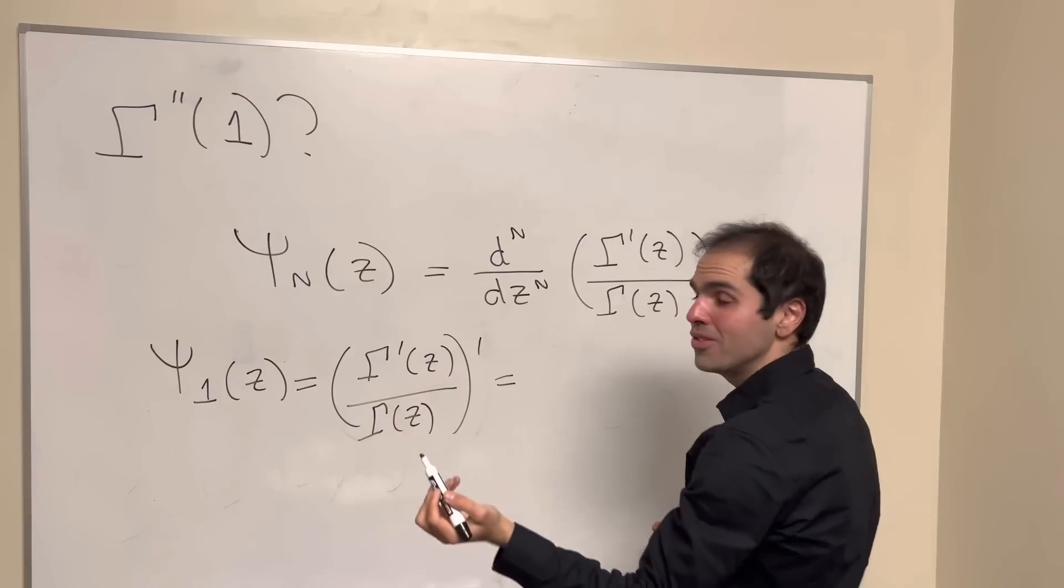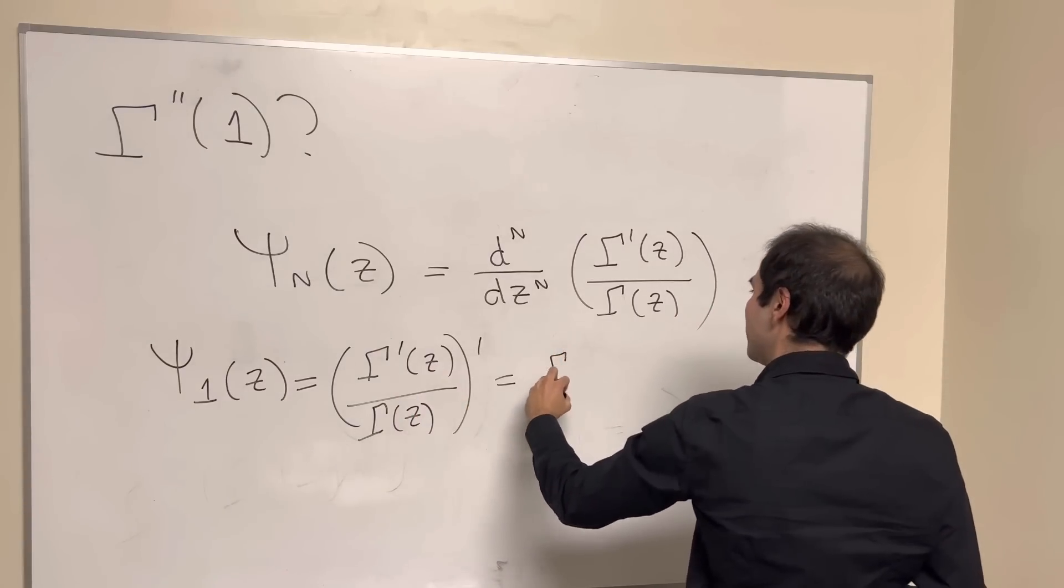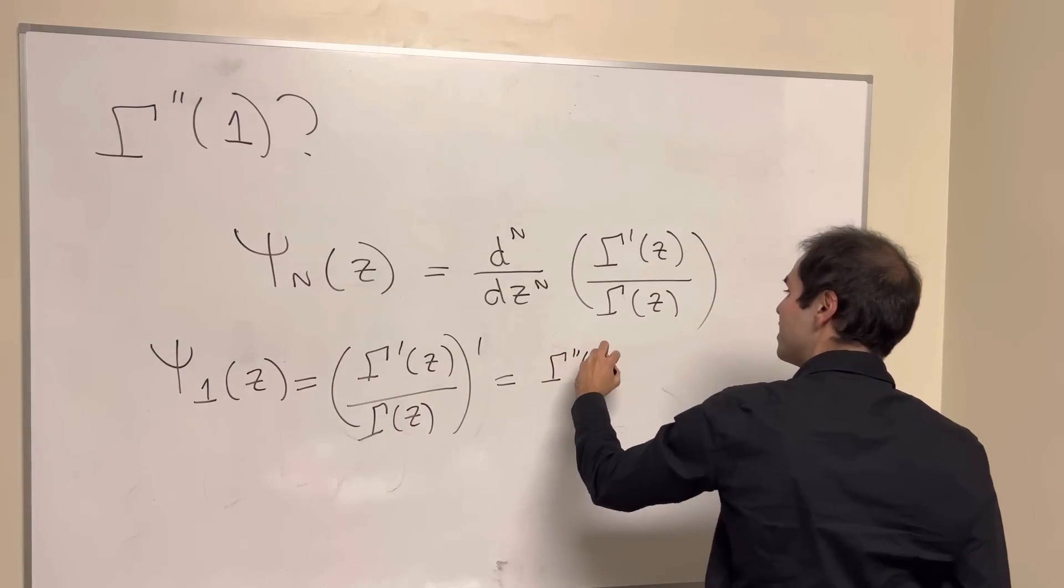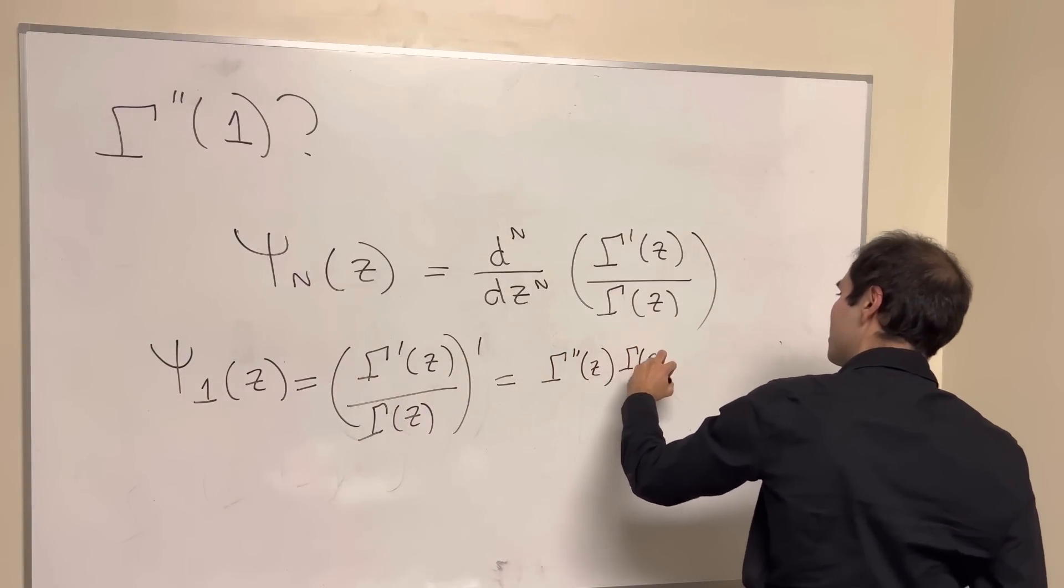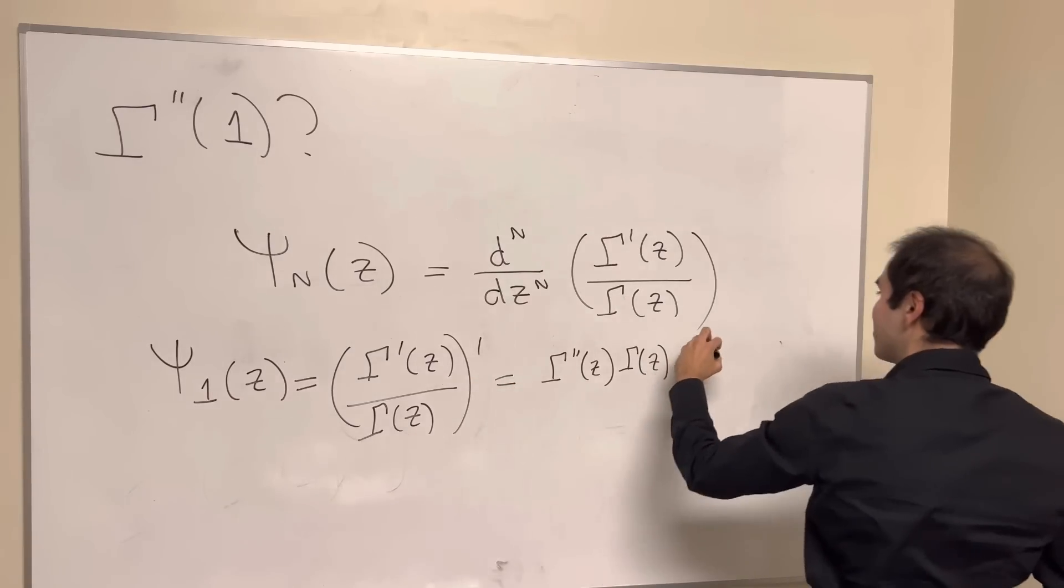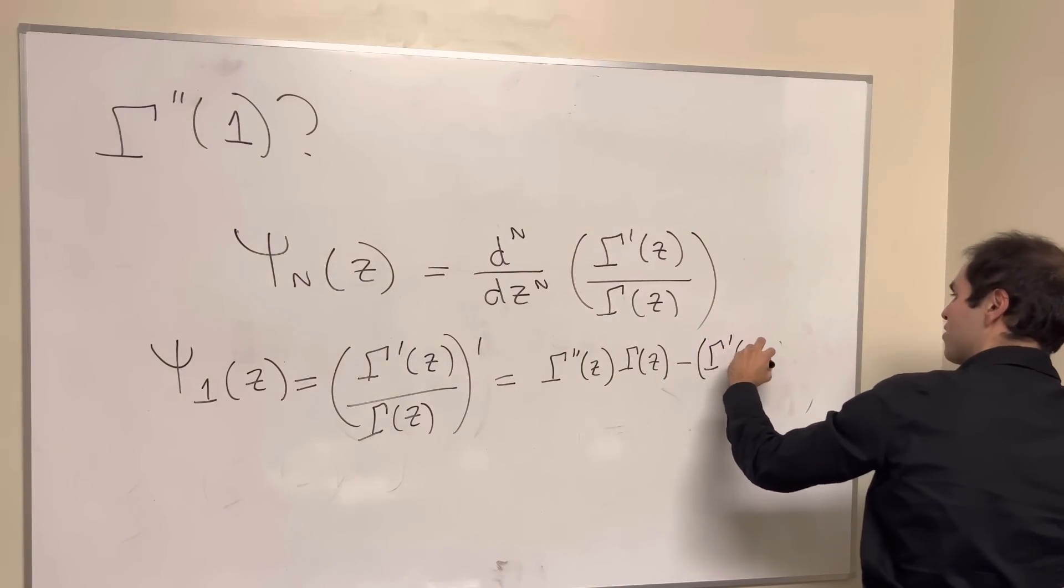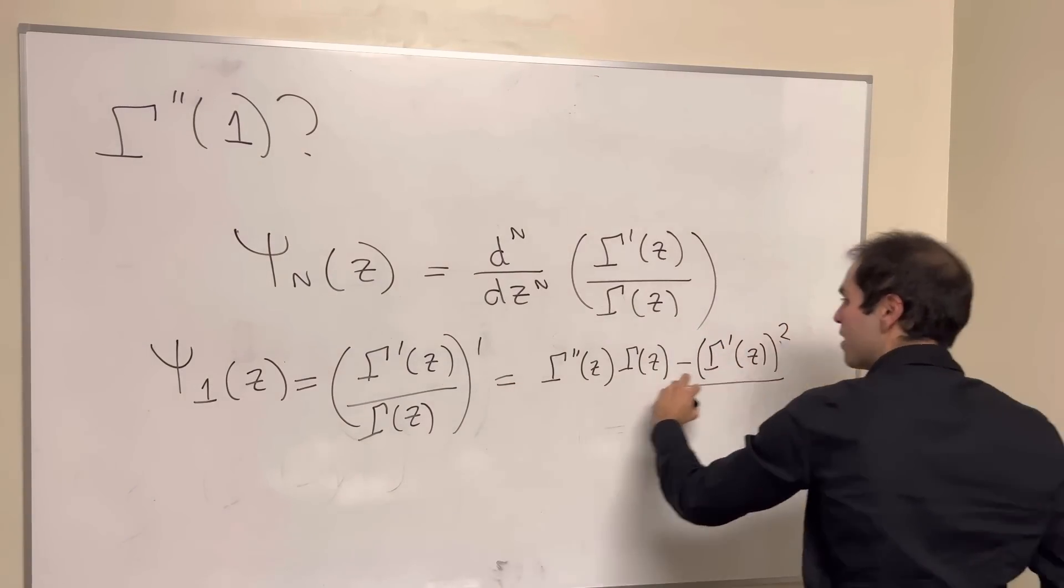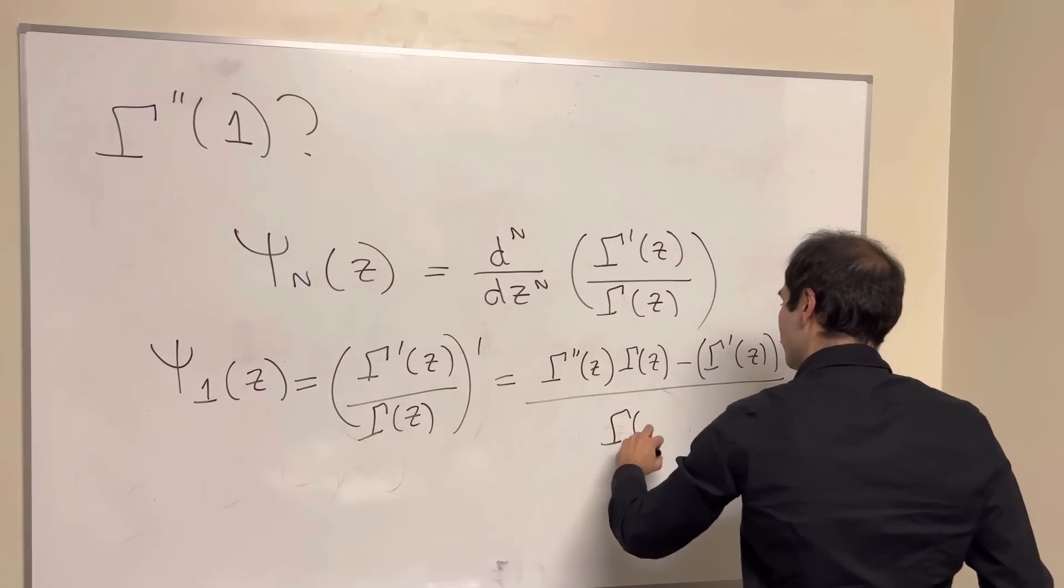And now just use the quotient rule. So this gives you gamma double prime of z times gamma of z minus gamma prime times gamma prime. So gamma prime of z squared over gamma z squared.